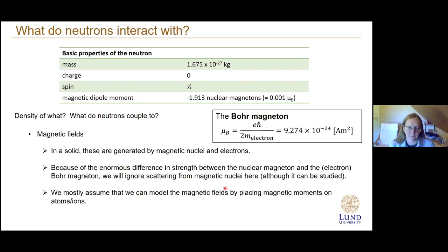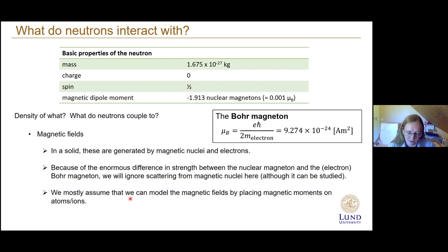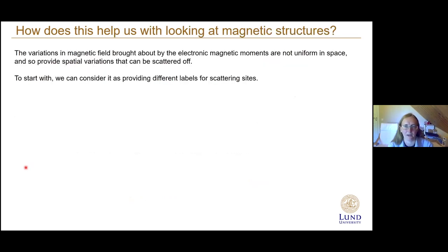In a solid, these magnetic fields are generated by magnetic nuclei and electrons. However, because the moment associated with magnetic nuclei is usually very small — a thousandth of that of the electron — the electron behavior usually dominates. For the purposes of this course we will mostly ignore effects from magnetic nuclei, and assume we can model the magnetic fields in materials by placing a magnetic moment on each atom.